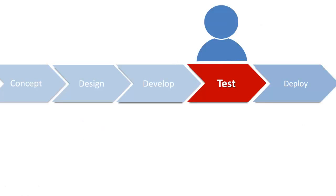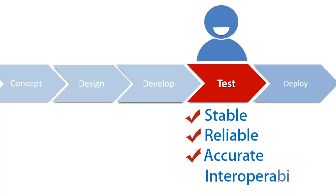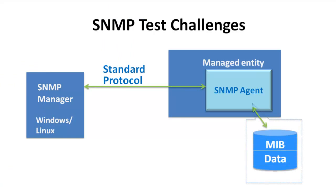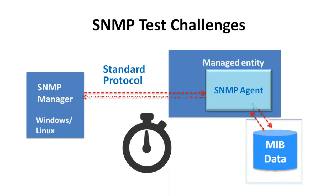Testing ensures that your product is stable, reliable, and the information given is accurate. Networking products also need to be checked for interoperability. SNMP agent testing for MIB and protocol compliance has its own unique challenges. Manual testing of thousands of variables supported by an agent is very error-prone, arduous, and time-consuming.